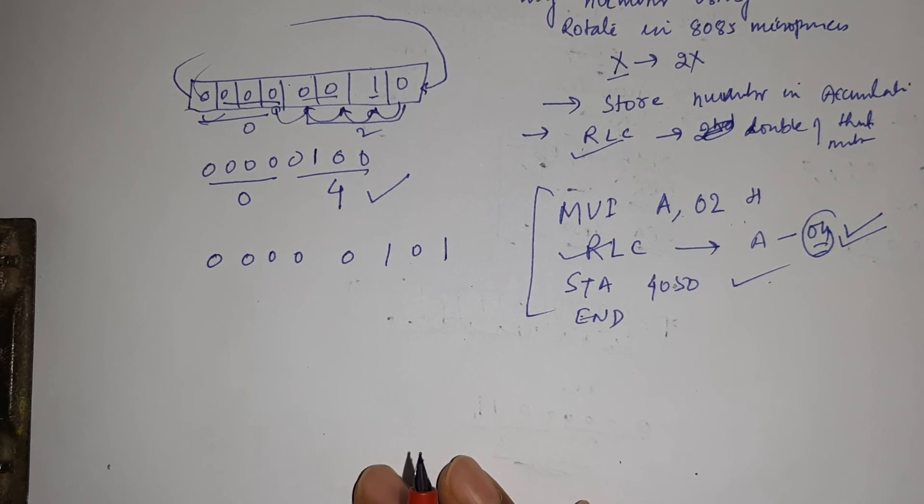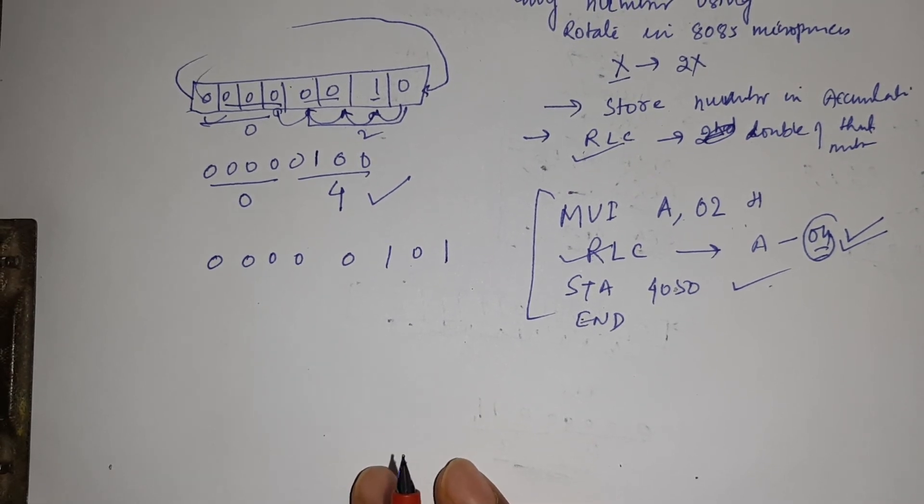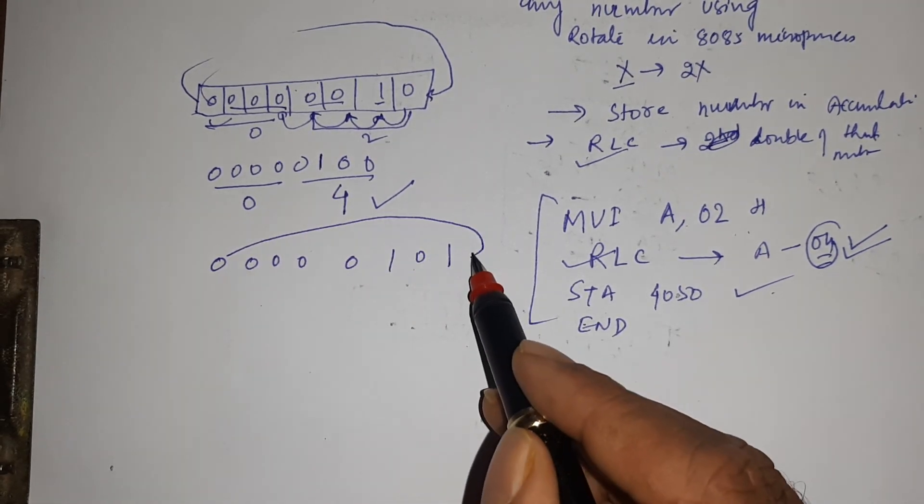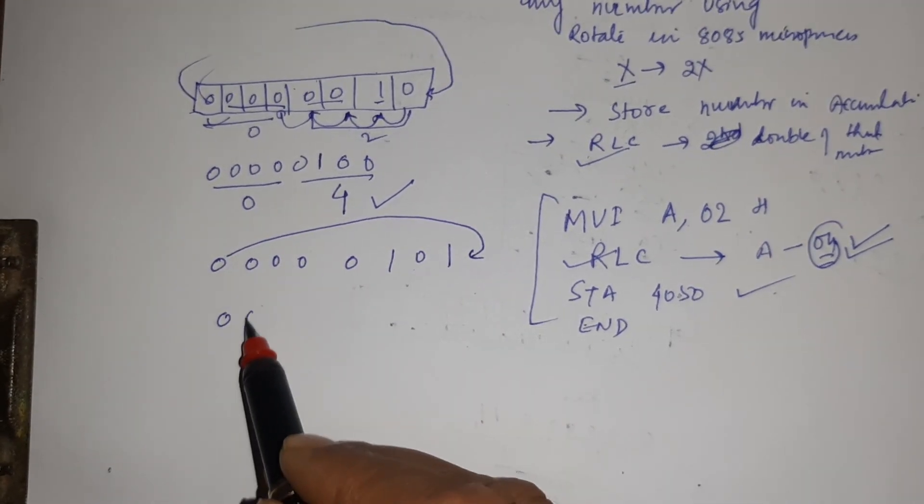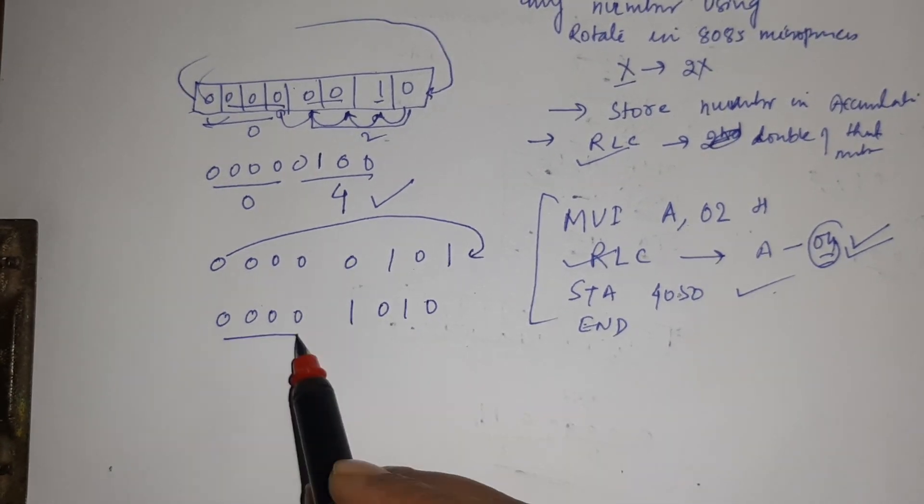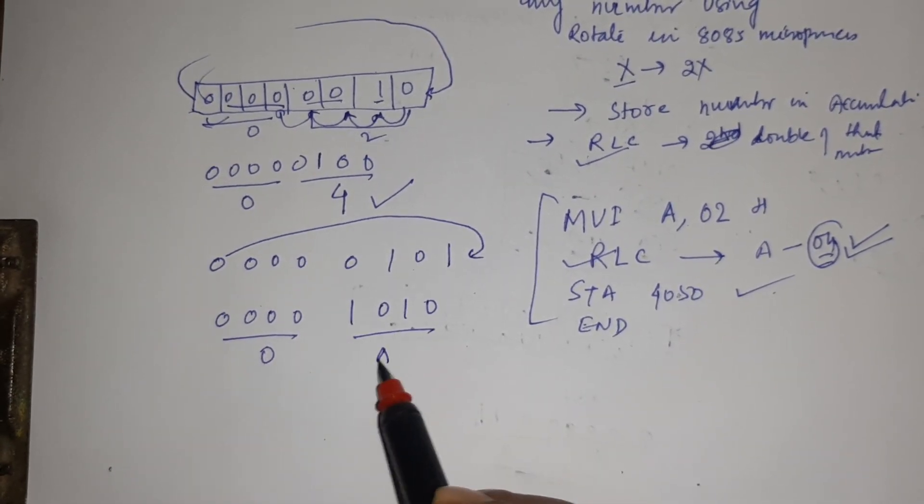You have to shift one bit left means this will shift here means 00001010. This will be 0A. So by using RLC you can get double of any number within a single line program.